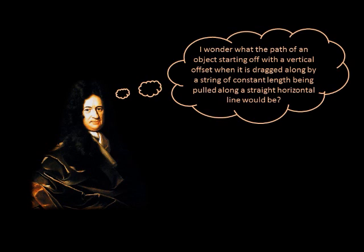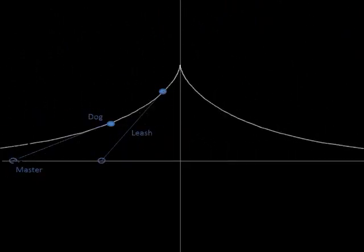Gottfried Leibniz was one of the first mathematicians to study this problem. To make more sense of this, let us rephrase it in the following way. Imagine a dog on a lead being dragged by its master. What is the path made by the dog if the master walks in a straight line?